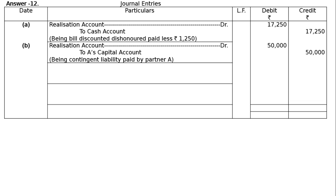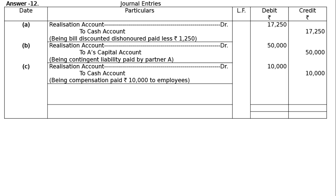Part C: The firm will have to pay Rs 10,000 as compensation to an injured employee. This was a contingent liability not previously accepted by the firm. Now the firm has to pay, so a payment entry is made: Realization Account debited and Cash Account credited for Rs 10,000, being compensation paid to the employee.